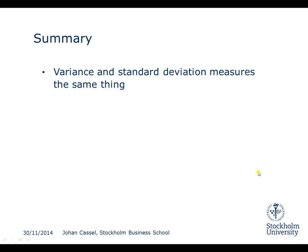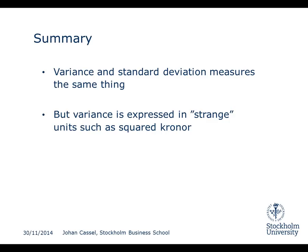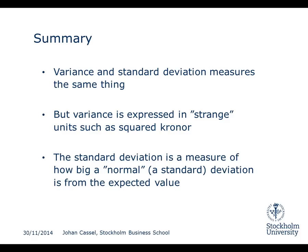So variance and standard deviation actually measure the same thing — they both measure how far away from the expected value you should expect to end up. The problem with variance is that it is expressed in strange units, such as squared Kronor. The standard deviation is the measure we usually use: it tells us how big a normal or standard deviation is from the expected value. Of course, you can have deviations which are larger — the good outcome in this game, the plus 2,000 or 122,000, was never within the range of one standard deviation — but the standard deviation is still a useful measure of how big the deviations usually are.